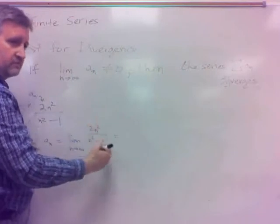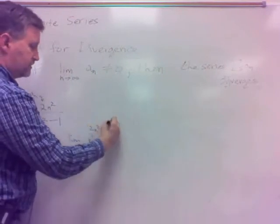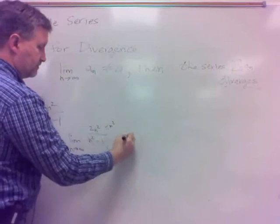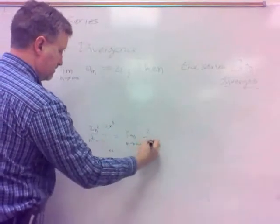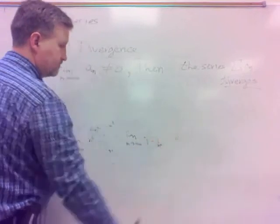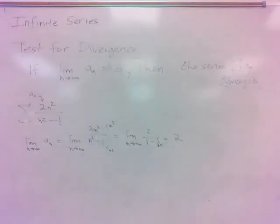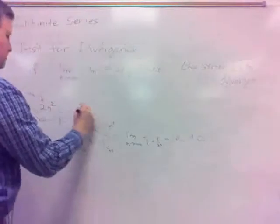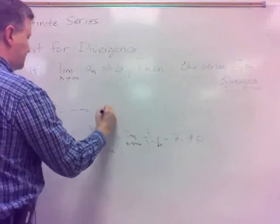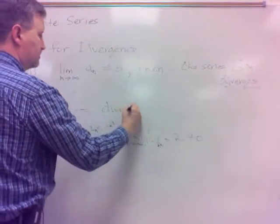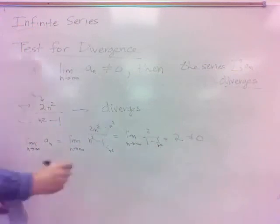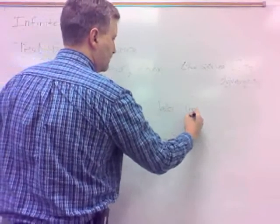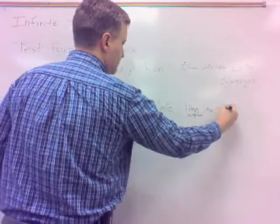However you want to do it — divide by n squared over n squared — that'll become 2 over 1 minus 1 over n squared. That's 2. It's not zero. So this diverges, because the limit of a sub n does not equal zero.